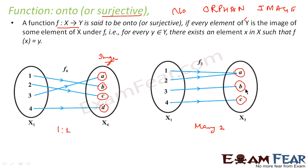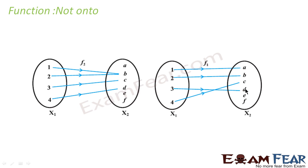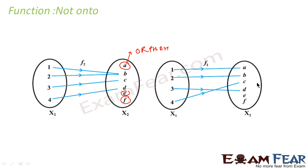Now let's take an example of a function that is not onto. In this image, this element is an orphan — for element A there is no pointer coming in. Similarly, D and E are also orphan elements. Since they are orphan, it is not onto. Here also, for E and F there is no element mapping to them, so it is not onto.